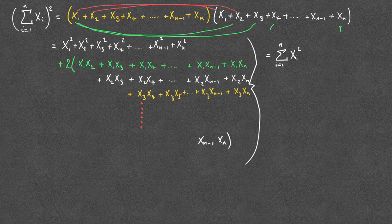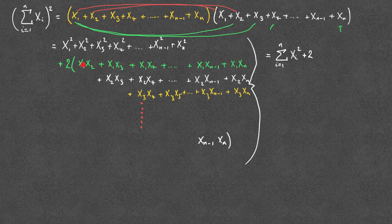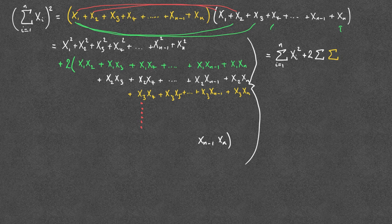Now, the bit that's slightly trickier is the next part. We've got two lots of a sum, and we're increasing in two dimensions. As we go downwards, the index on the first term is increasing; as we go along, the index on the second term is increasing. So let's write this using two summations. The first summation relates to the first subscript, going 1, 2, 3, 4, 5, all the way up to n minus 1. So this first summation is from j equals 1 to n minus 1.